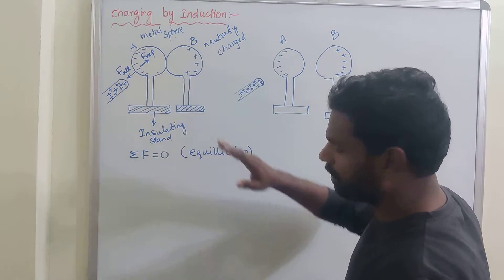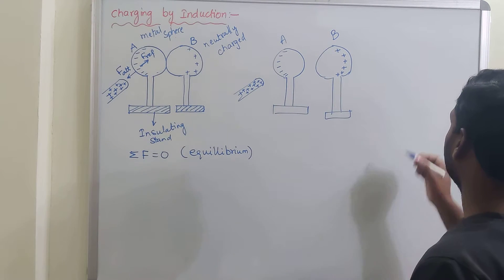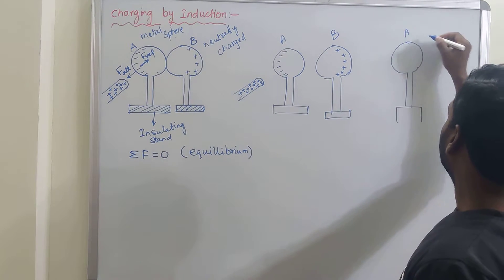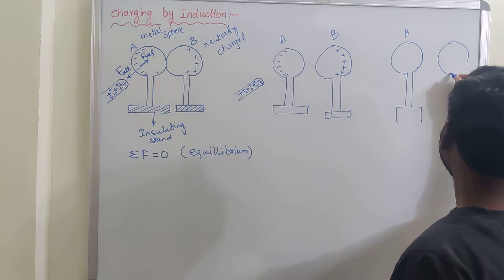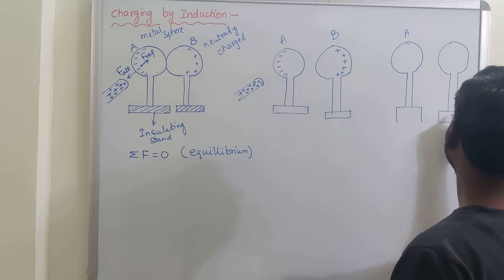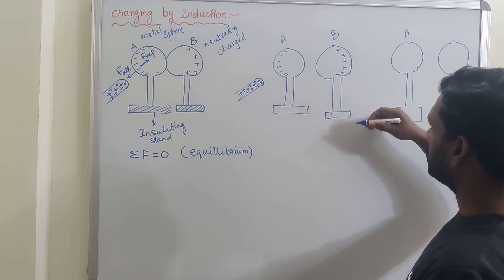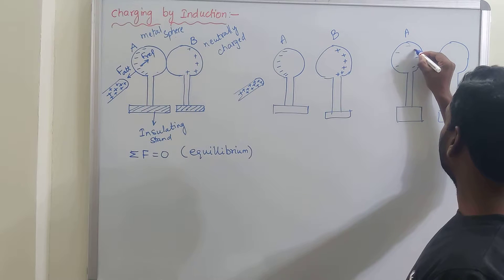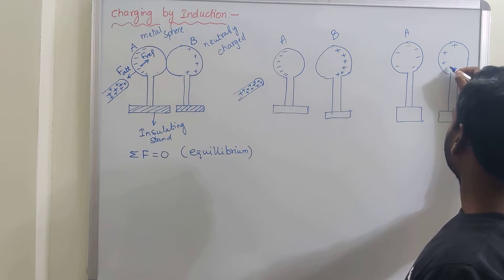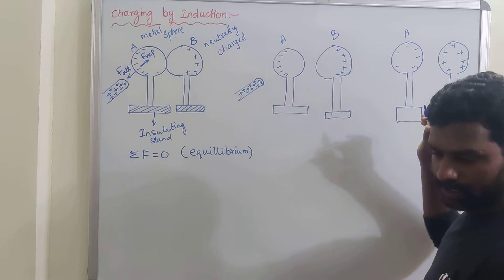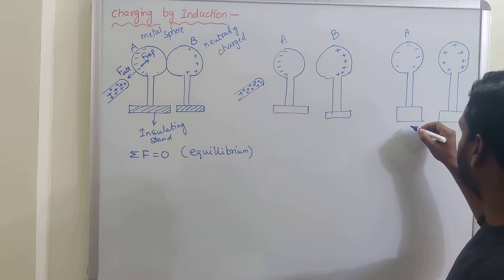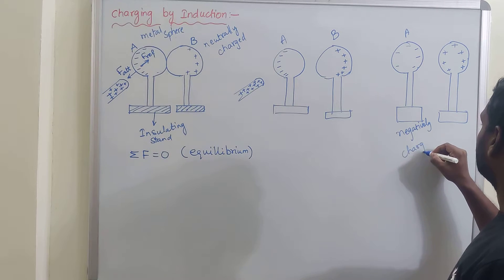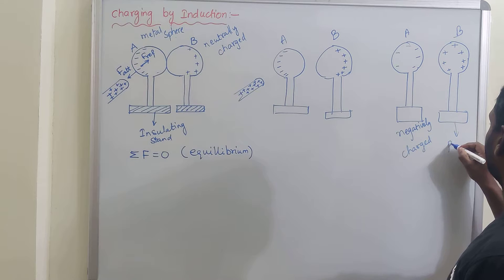Now I remove the glass rod. When the glass rod is removed, the negative charges redistribute equally on all sides of sphere A. So sphere A becomes negatively charged and sphere B becomes positively charged.